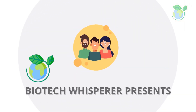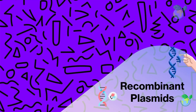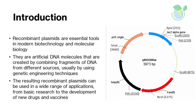Hello and welcome to today's video, where we will be discussing recombinant plasmids. Recombinant plasmids are essential tools in modern biotechnology and molecular biology. They are artificial DNA molecules created by combining fragments of DNA from different sources, usually using genetic engineering techniques. The resulting recombinant plasmids can be used in a wide range of applications, from basic research to the development of new drugs and vaccines. Let's dive in and learn what they are and how they work.